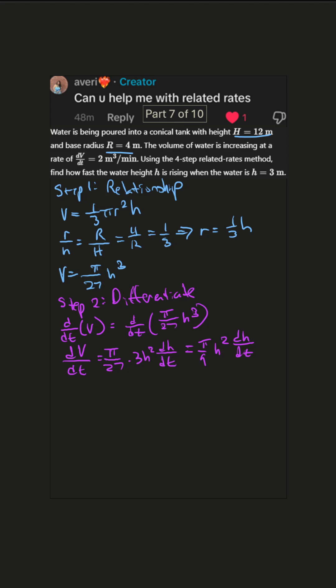Alright, we're getting there. Step 3, plug in the known values, so we substitute. We know dV/dt is 2, and h is 3. So I just plug those in, we get 2 equals, well if we plug in 3 for h, that'll just be π dh/dt.